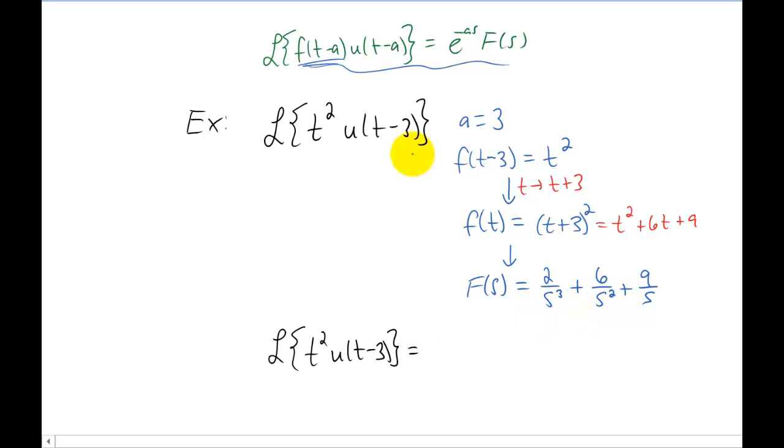So now we have that capital F of s is this right here. And now we have everything we need to write down an answer. The answer to our original Laplace transform is e to the negative a s which is e to the negative 3s times f of s which is 2 over s cubed plus 6 over s squared plus 9 over s. And that's it.